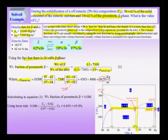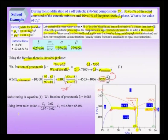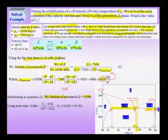Since I now have the density of the eutectic mixture, I substitute it back into equation 1. I can get the fraction of the pro-eutectic beta to be 0.086. This is the weight fraction of the pro-eutectic beta phase — I have converted my volume fraction of 10 percent into 0.086 weight fraction, which is 0.86 weight percent.